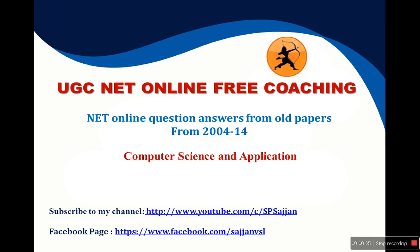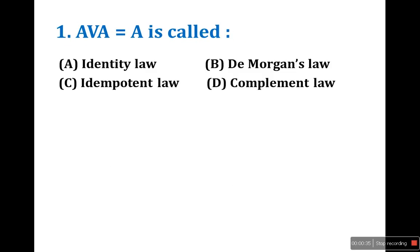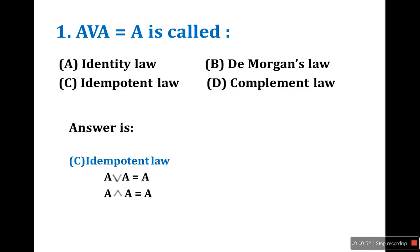We'll begin our journey today with the December 2004 question paper. The first question: A or A equals A is called what? These are all standard theorems. The answer is Idempotent law. But it may also ask about Identity law, De Morgan's law, or Complement law, so go through the reference table.